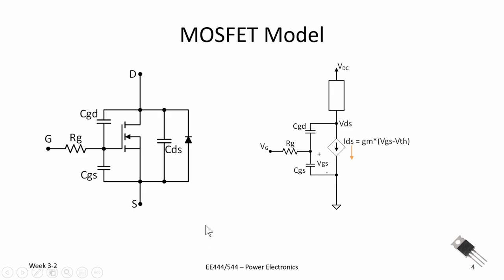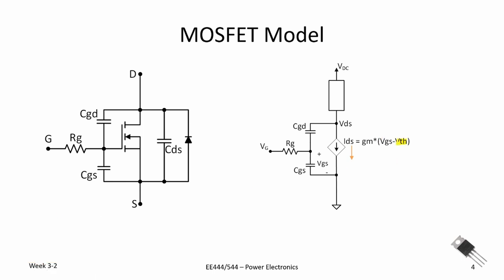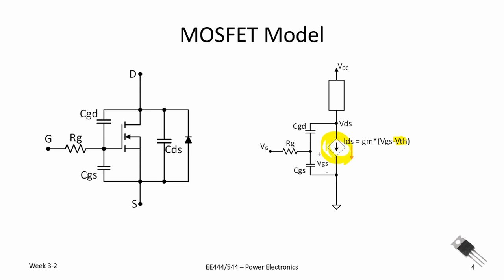We can now look at the MOSFET using a slightly different model — a small-signal model — where we show the transconductance I_DS equal to G_M times V_GS. There's also a term V_theta, the threshold voltage, which the gate-to-source voltage must exceed before we start to turn the device on and get drain current flowing.